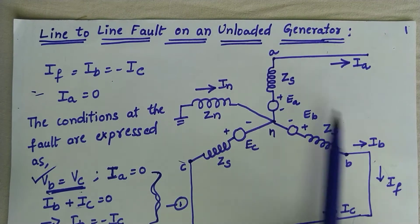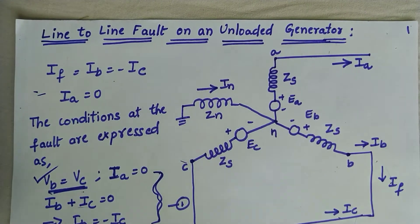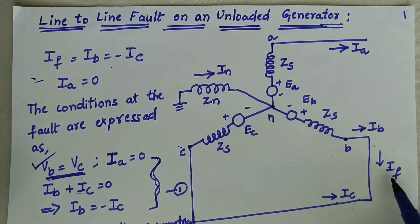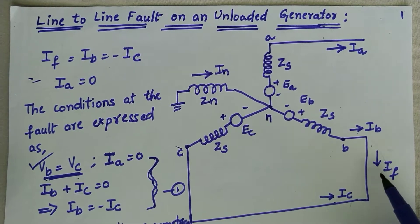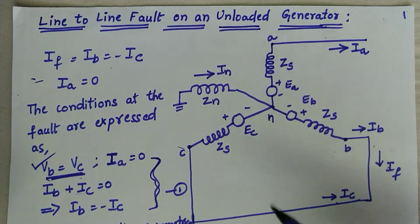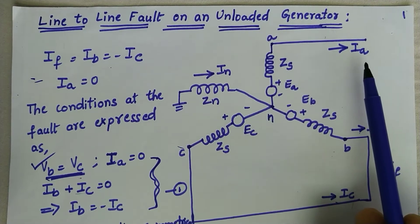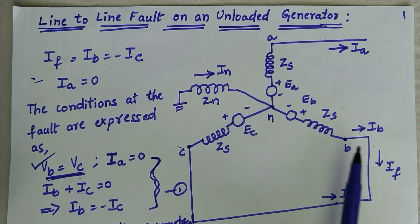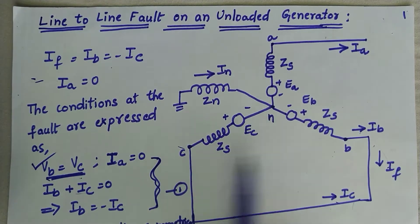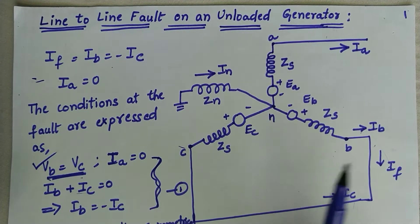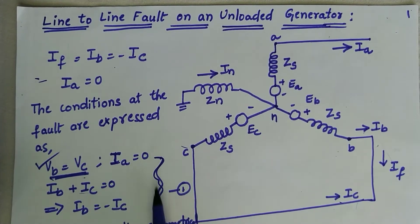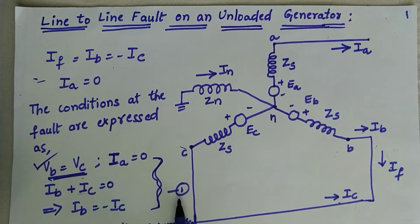Under this fault condition we can observe that the fault current is equal to Ib, which is equal to minus Ic. Since the generator is under no load, Ia is going to be 0. One more observation is that Vb and Vc are the same. These collective observations will be called equation 1.